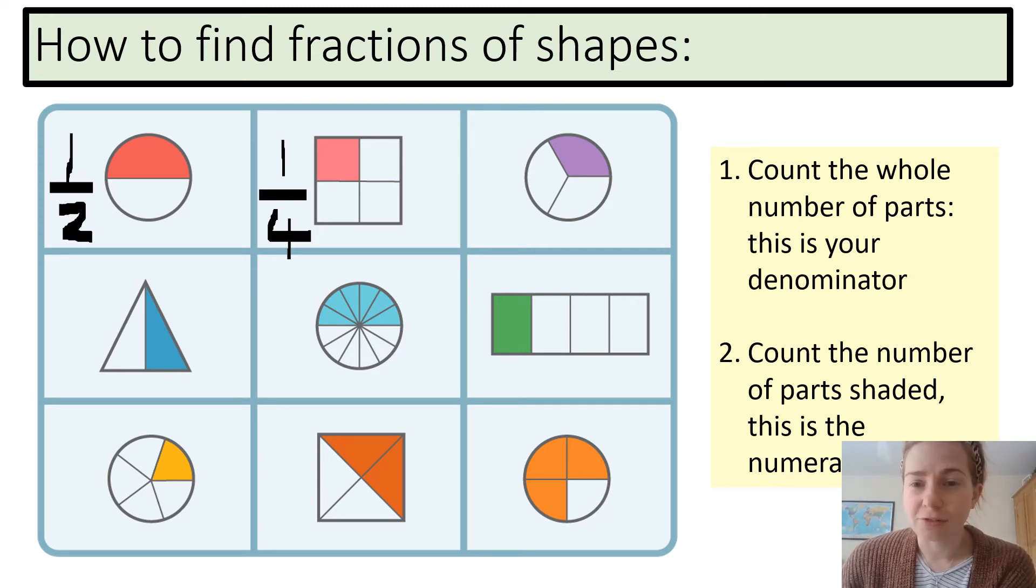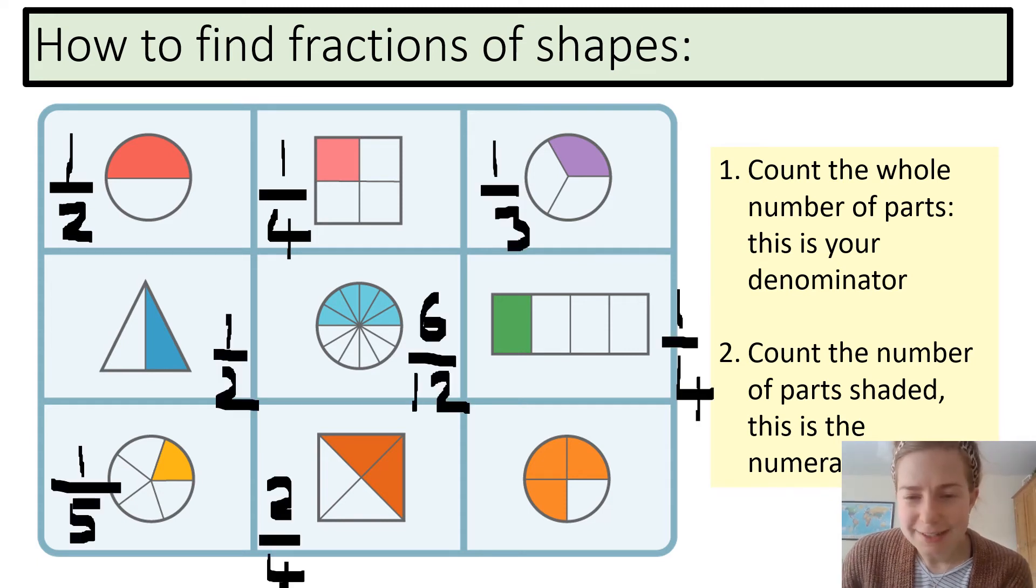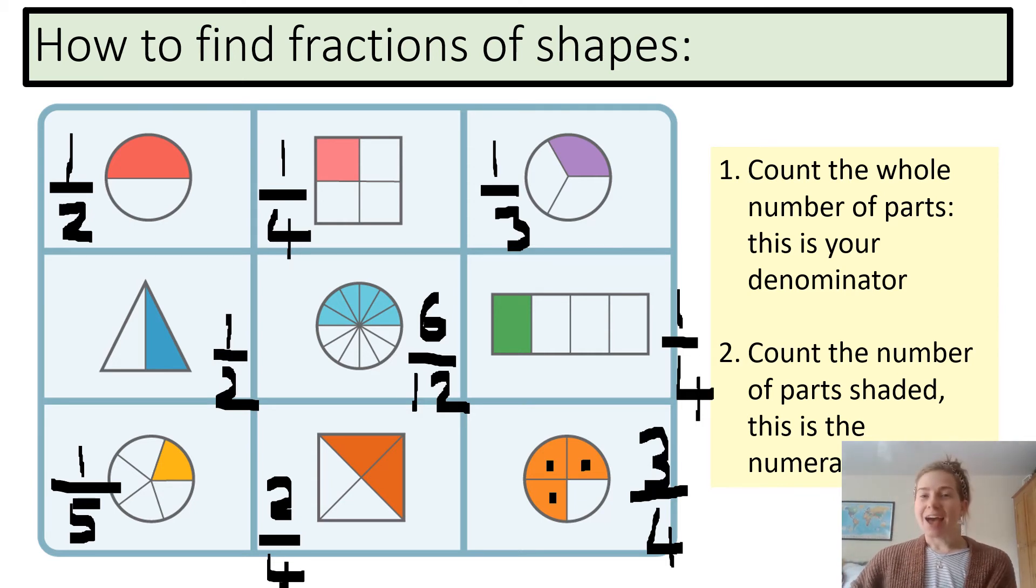Now, I want you to pause me and have a go at doing the rest of these fractions. For the last one, let me count up one, two, three, four. I have four parts, so my total number of parts is four, my denominator. One, two, three are shaded, mark them off as I count them, so my numerator is three, so I have three quarters. Hopefully, you've got them all correct. Really well done.